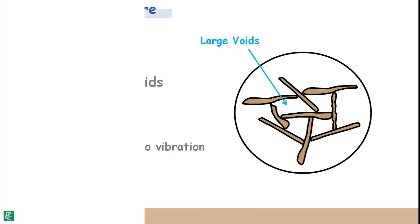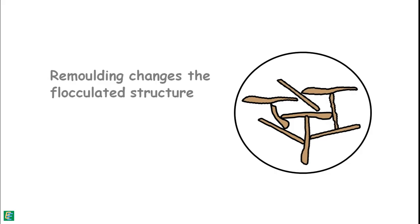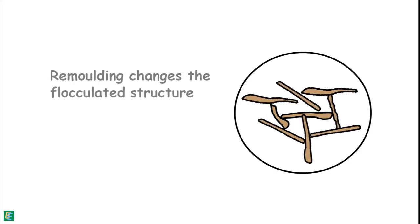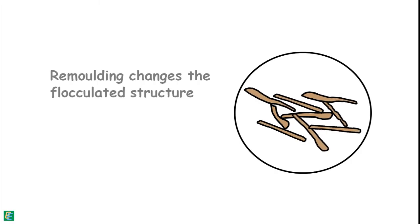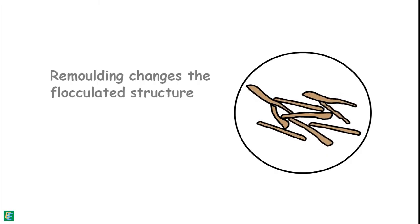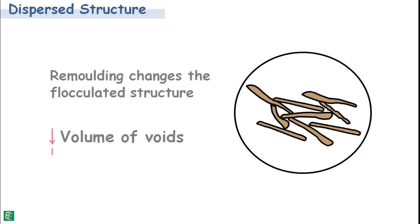When clay soils are remolded, their flocculated structure changes and particles change their orientation from edge-to-face orientation to face-to-face orientation. This kind of soil structure is called dispersed soil structure. These soils have a relatively low volume of voids and consequently a low void ratio.